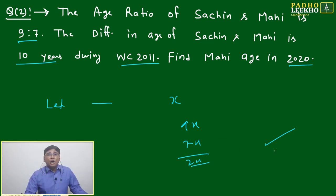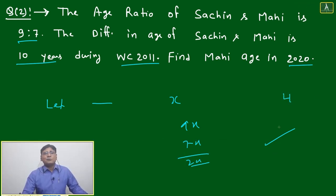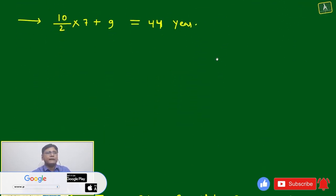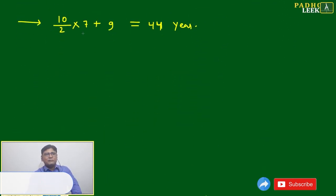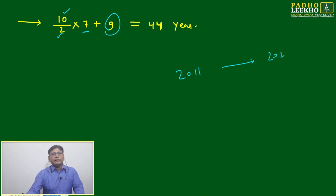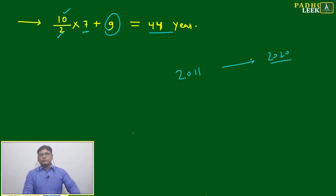But how to solve in one liner? The answer will be 44: 10 divided by 2 times 7 plus 9. That's it, just one liner. 10 by 2 into 7 plus 9. This is the base ratio, Mahi's age. Difference of age divided by difference of base ratio. After 9 years, from 2011 to 2020, 10 by 2 into 7 plus 9 equals 44 years.